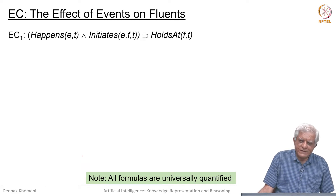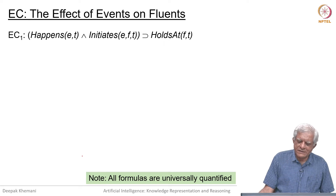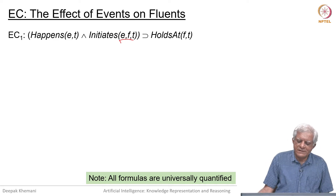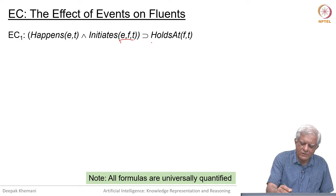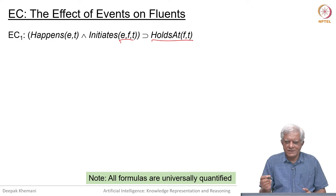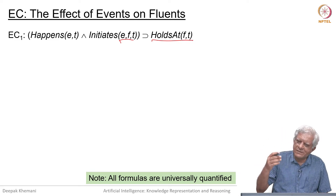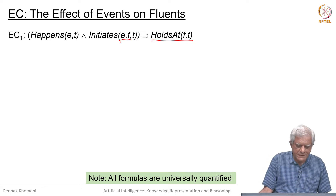This is an event calculus axiom. It says that if an event e happens at time t and it is known that event e initiates a fluent f, then the fluent f holds at time t. So we can say that if the robot has picked up the block then the robot is holding the block, but now we have time as a parameter as well.